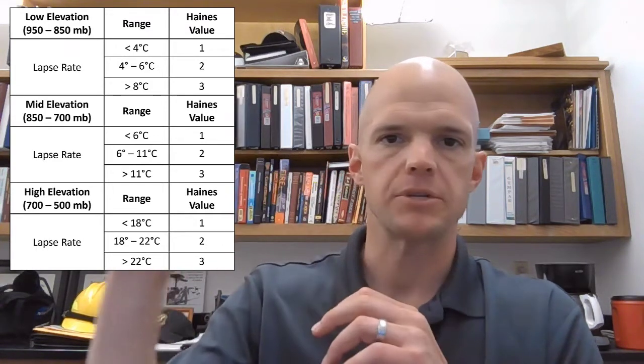Remember the Haynes index combines two things. Combines a dew point depression or a dryness term with a lapse rate term. Those two things are each given a value of 1, 2, or 3, and then are combined together to get a Haynes index value of 2 to 6. So those break points for a Haynes value of 1, 2, or 3 for the lapse rate side of things are up on your screen right now. The top section is for the low variant of the Haynes index.